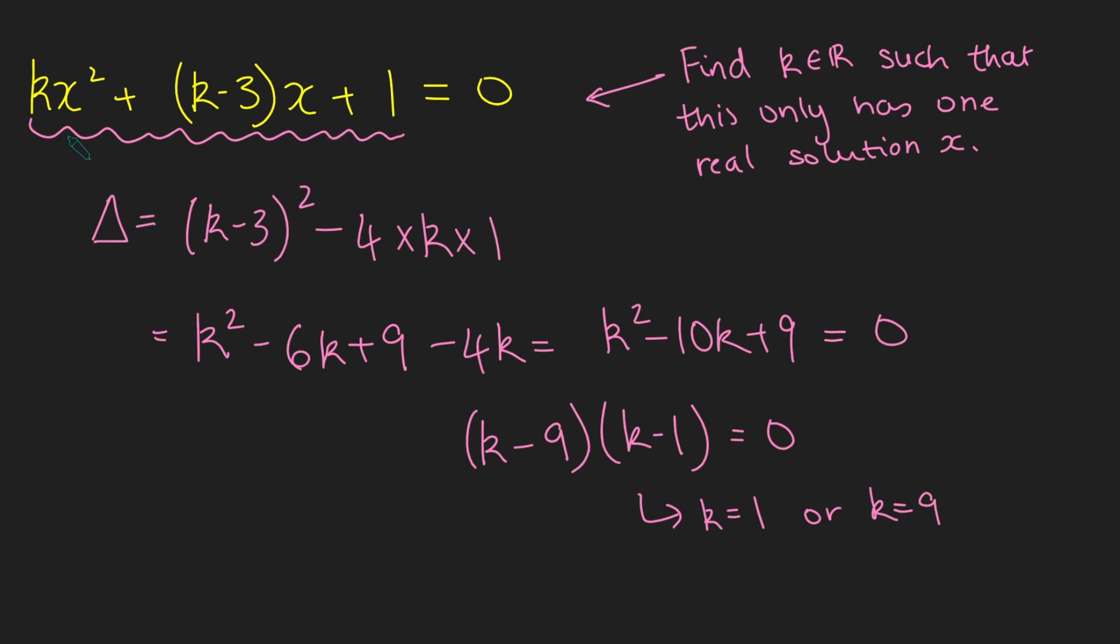And we go, hold on a minute, it's not always a quadratic. Because if this k term here is 0, this term would vanish, and we'd just be left with a linear term. And so therefore, we need to consider what happens there separately.